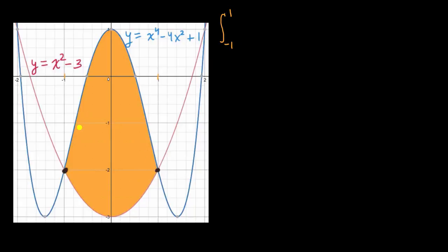And now let's think about our upper and lower bounds. Over that interval, this blue graph is our upper bound. And so we would subtract the lower bound from the upper bound. So we would have x to the fourth minus four x squared plus one. And from that,